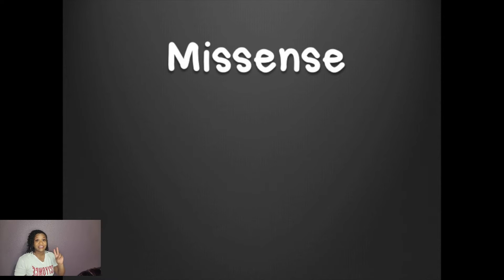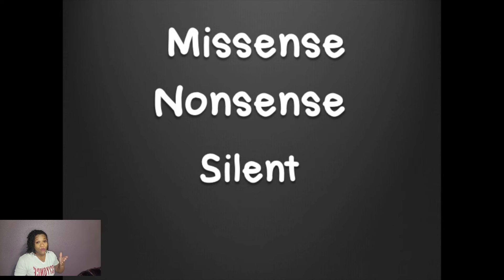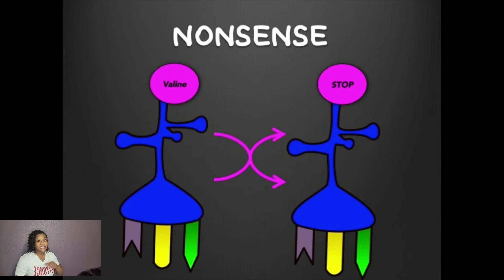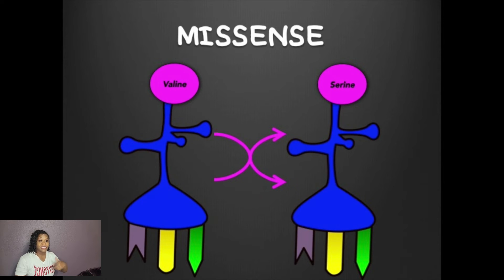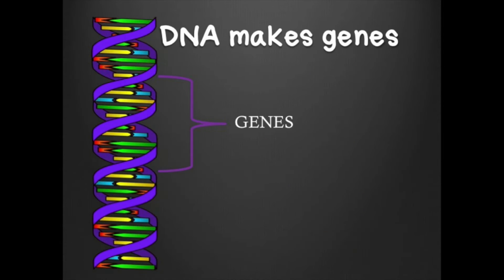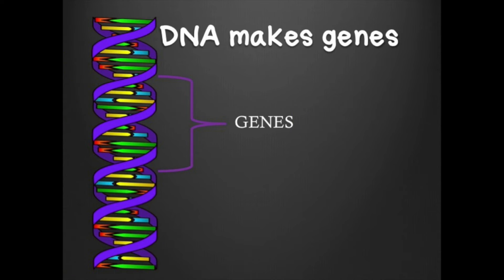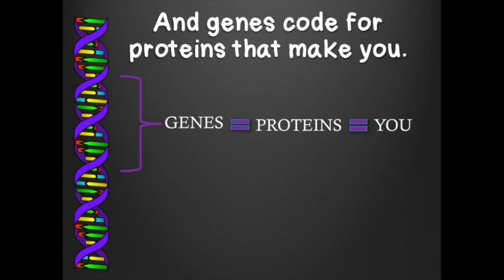Missense, nonsense, and silent mutations will affect the amino acids we get. When a codon is changed to a stop codon, that's nonsense. When it's changed to another amino acid codon, it's called missense.